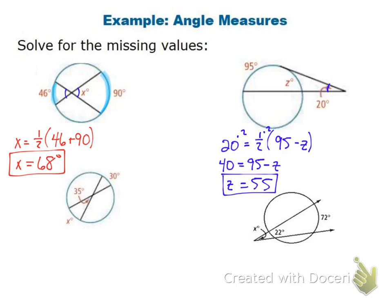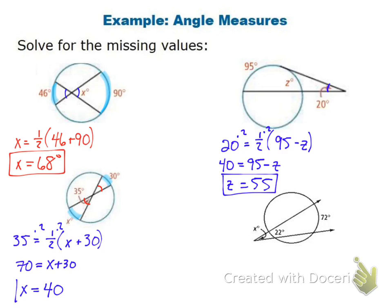For the bottom left problem, I have a 35-degree angle and the two arcs are 30 degrees and X. So 35 equals one half times X plus 30. Multiplying both sides by two gives 70 equals X plus 30, so X equals 40. For the last problem, the angle is happening outside, so it's far arc minus near arc: X equals one half times 72 minus 22, so X equals 25.